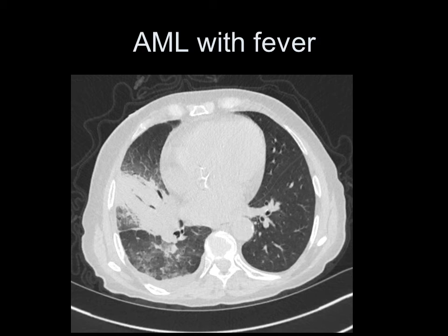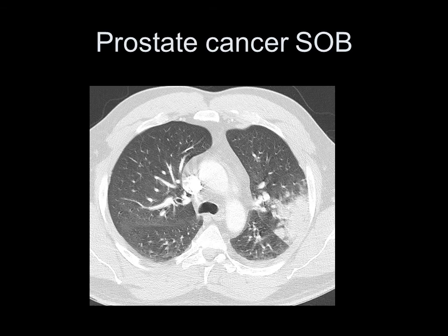Here's what I would consider a much more severe area of consolidation, and I think I'd be fairly confident about this because the patient did have a fever, significant respiratory symptoms, and improved with antibiotics. We have a large area of opacification with air bronchograms that are well separated. The clinical history here is acute myeloid leukemia with fever.